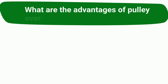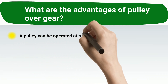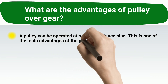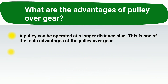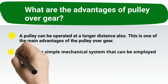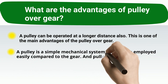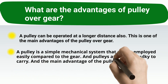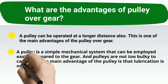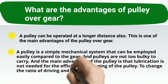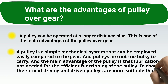What are the advantages of pulley over gear? A pulley can be operated at a longer distance, which is one of its main advantages. A pulley is a simple mechanical system that can be employed easily compared to gear, and pulleys are not too bulky to carry. Lubrication is not needed for the efficient functioning of the pulley. To change the ratio of driving and driven elements, pulleys are more suitable than gears.